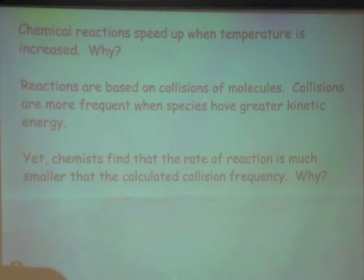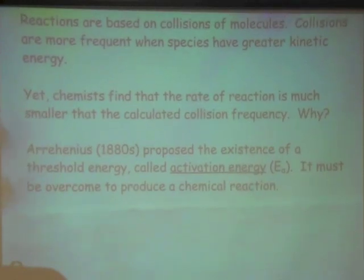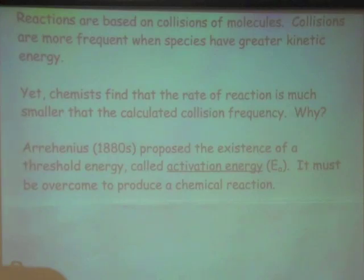So there must be something else involved in reactants colliding besides just the point of them colliding. Colliding is one thing, but there must be another variable in this equation that isn't accounted for just from the force of the collisions and the number of collisions that occur. So Arrhenius in the 1880s proposed the existence of a threshold energy, and that energy is known as the activation energy, and it must be overcome to produce a chemical reaction. Every chemical reaction has its own unique activation energy.